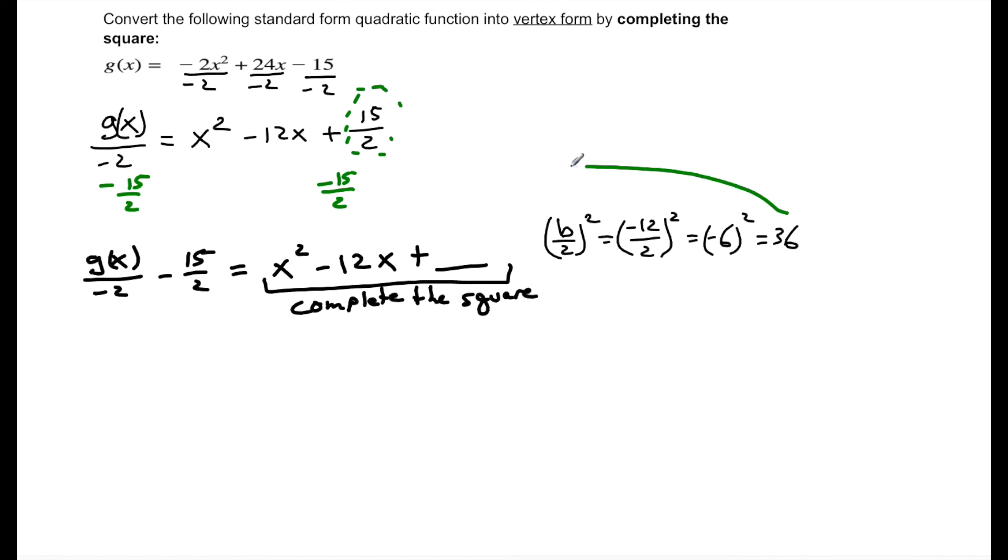So that term is going to go right in there. And if I add 36 to one side, I have to add it to the other side. So I've got g of x over negative 2 minus 15 over 2 plus 36.